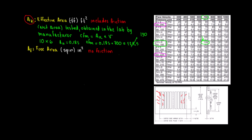To summarize, the effective area is the area of the register, diffuser, or grill that the air uses to flow through it, including friction. Now we're going to go ahead to free area. The free area is not including the friction — it's the area when you're not counting the blades.